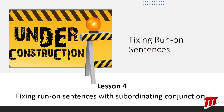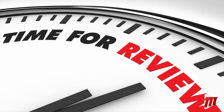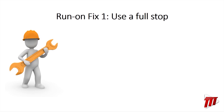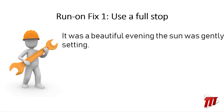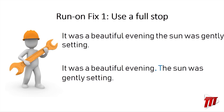Welcome back, students, to the final lesson in this series on fixing run-on sentences. We're going to be looking at yet another way to fix a run-on sentence — using subordinating conjunctions. But first, we must do some review. We have learned so far that you can fix a run-on sentence by using a full stop. For example: "It was a beautiful evening the sun was gently setting" — a classic run-on sentence with two independent clauses not properly joined. Fix: "It was a beautiful evening. The sun was gently setting." The full stop is often the best bet because it's the simplest to remember.